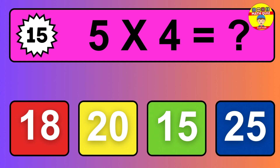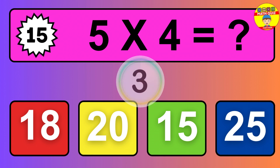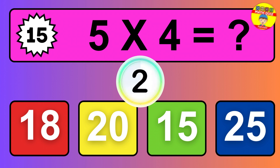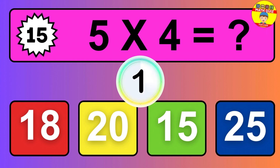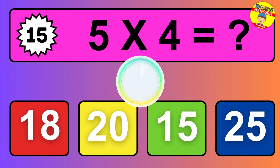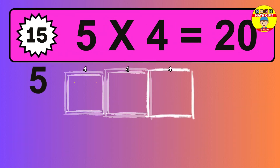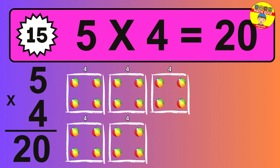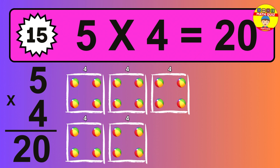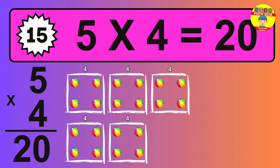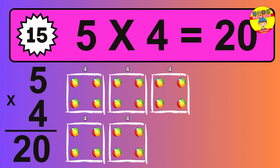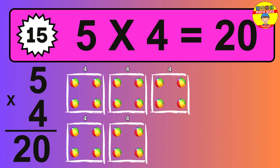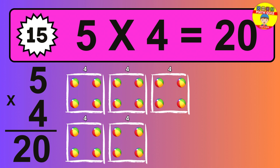Question fifteen. Five times four equals what? So the answer is five times four is 20. To calculate, we have five groups with four balls each one. So how many balls do we have? 20 balls.